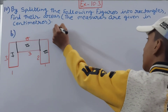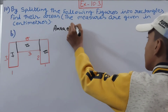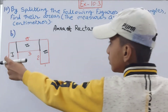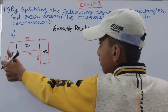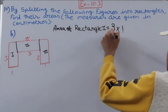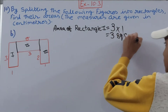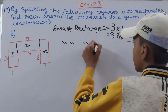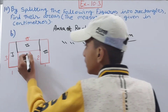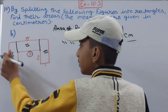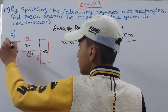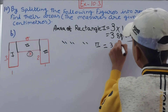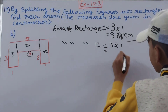Area of Rectangle 1: the length is 3 cm and the breadth is 1 cm, so 3 × 1 = 3 square centimeters. Area of Rectangle 2: the length is 3 cm and the breadth is 3 − 2 = 1 cm, so again 3 × 1 = 3 square centimeters.